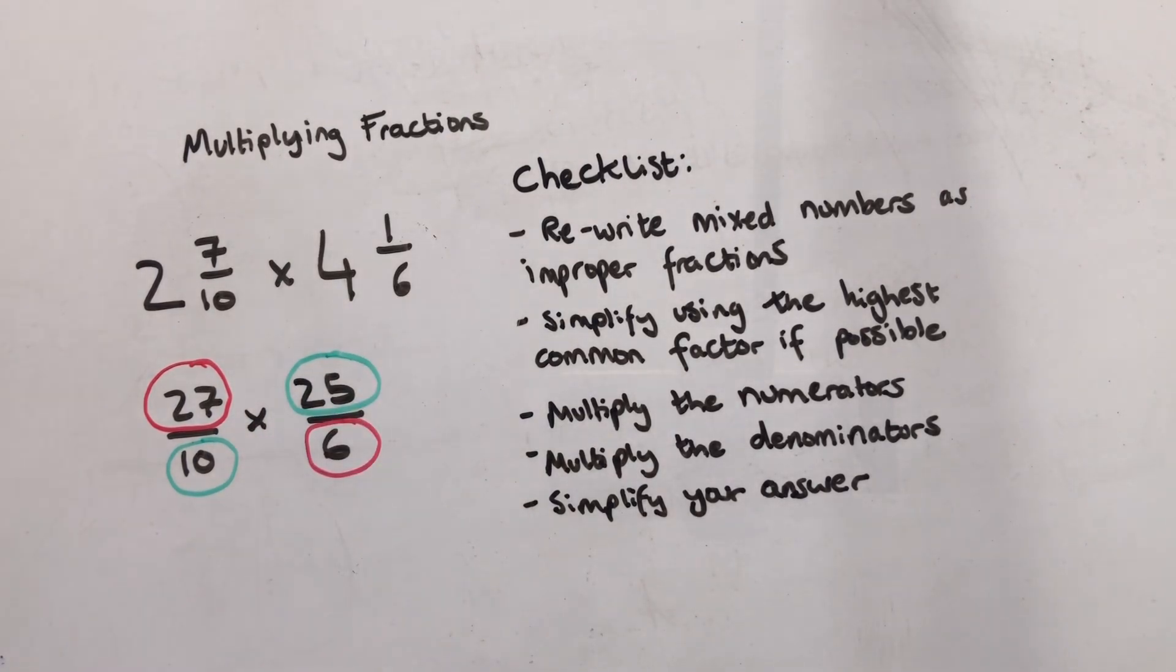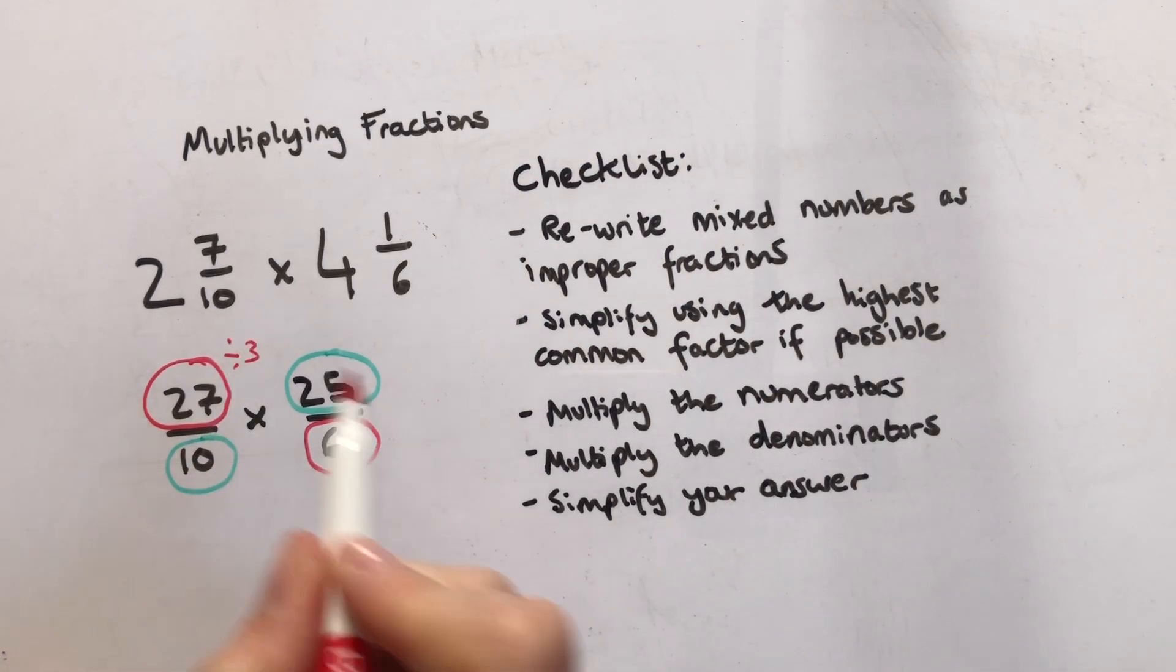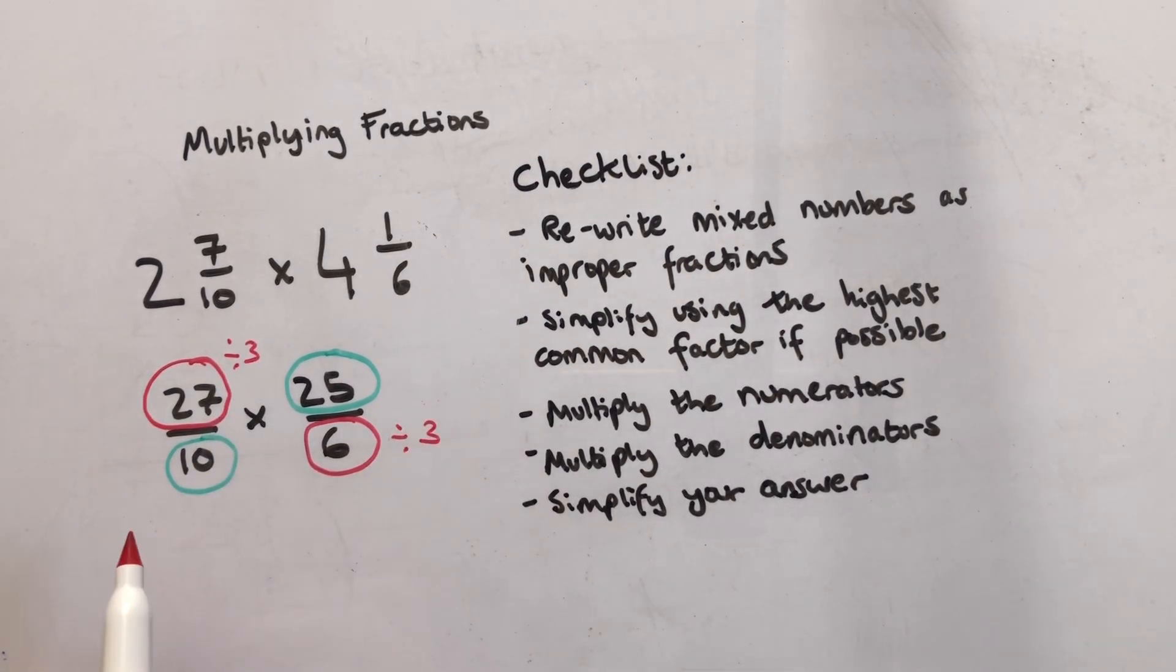So twenty seven divided by three is going to be nine. Six divided by three is going to be two.